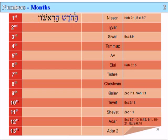Ha-Khodesh means month, and it's related to the word Ha-Dash, which means new, because the month renews itself like the moon every month. We have a new moon, we have a new month. Indeed, in English the word for moon and month are related. So a new moon, a new month, and a new covenant.